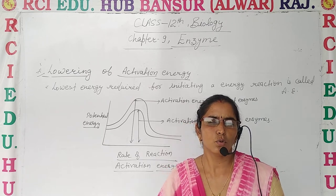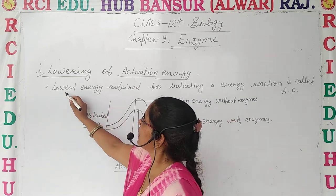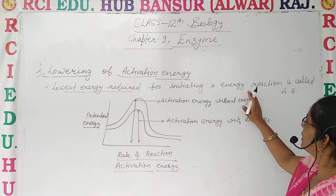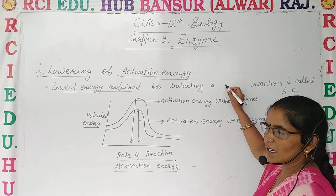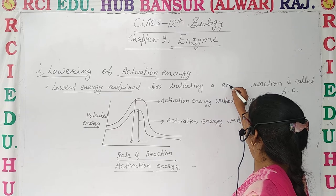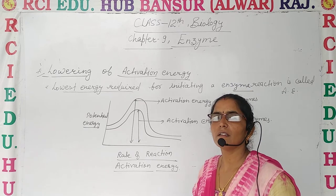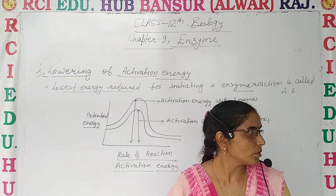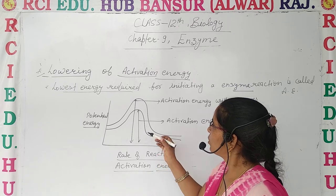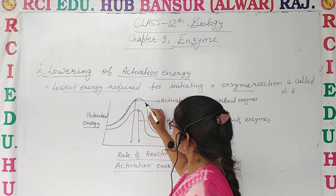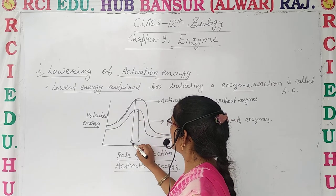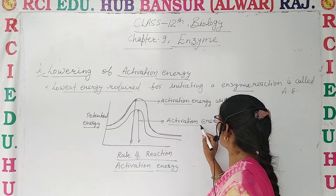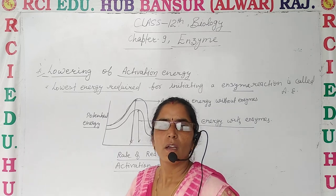The lowest energy required for the initiation of a reaction is known as activation energy. Here we have a simple graph: when you do not use an enzyme, the activation energy is high. But when you use an enzyme, the activation energy is lowered, and the substrate molecules are converted into products more easily.